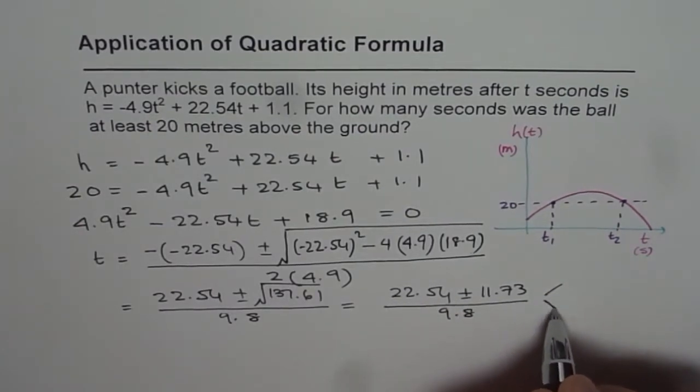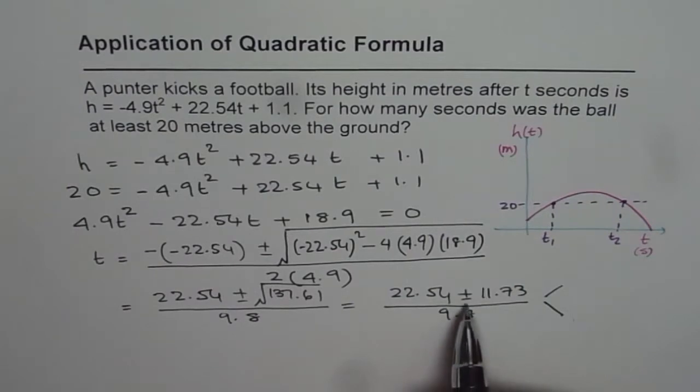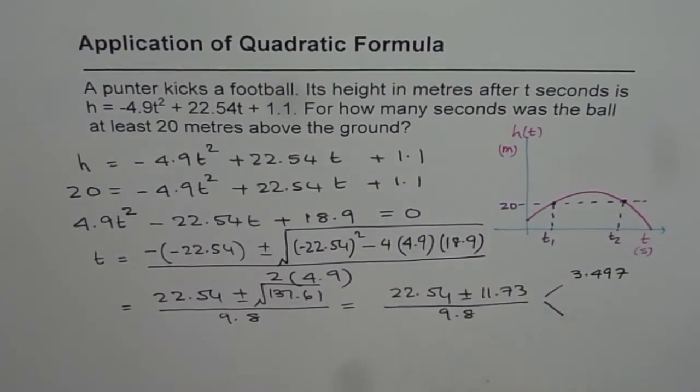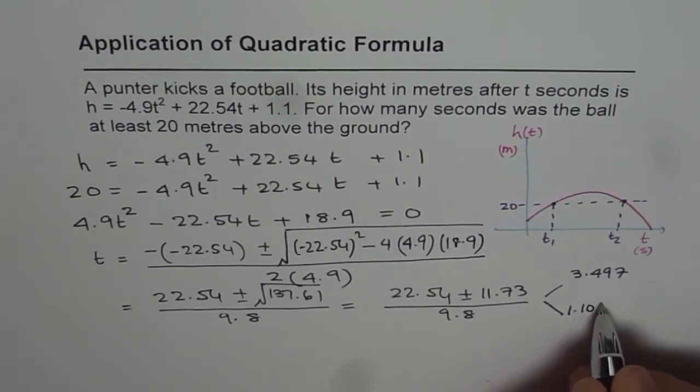So this equals 22.54 and square root of 137.61 is 11.73, so we will write plus minus 11.73 divided by 9.8, so that will give us two answers. One with the plus value and the other one with the negative value. So let us use first the plus value, so we will add 11.73 to 22.54 and then divide by 9.8. That gives us 3.497. Now the other one which we get is 22.54 minus 11.73 divided by 9.8, and that is equal to 1.103.